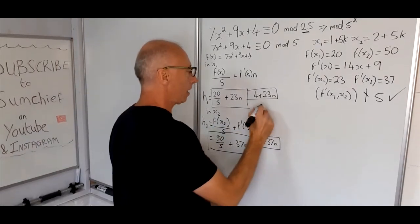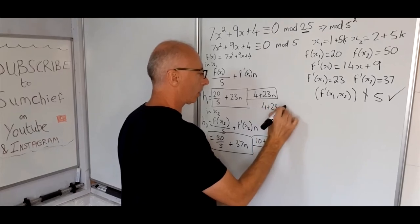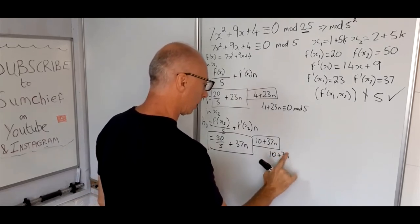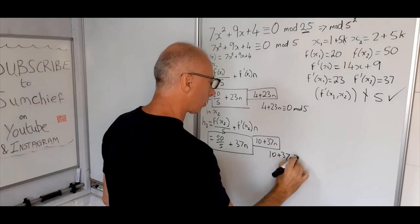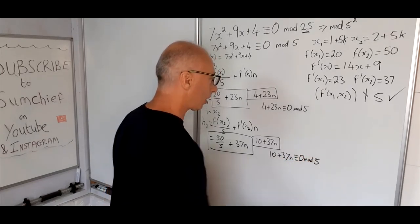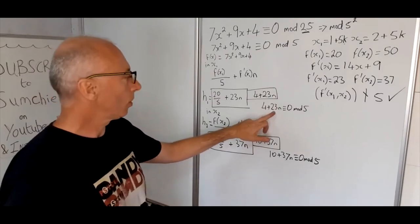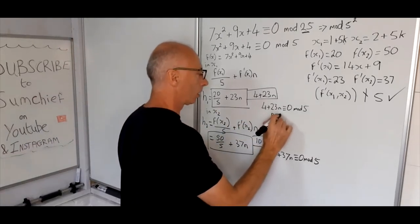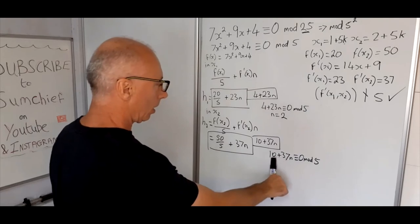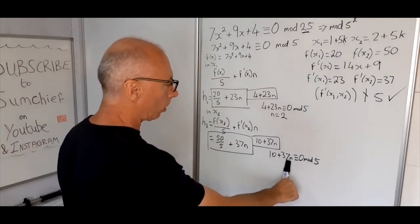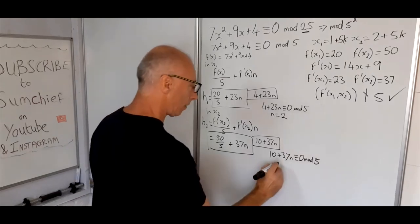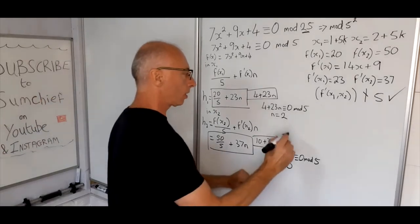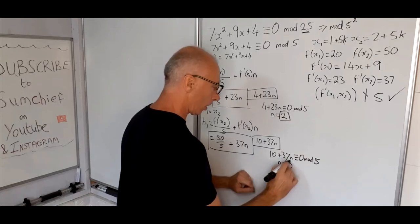So we've got -4 plus 23n is congruent with 0 mod 5. And here we will have -10 plus 37n is congruent with 0 mod 5. So -4 plus 23n to get something congruent with 0 mod 5. Well 2 times 23 is 46 so -4 plus 46 is 50 so n is 2. And here -10 is congruent with 0 mod 5 anyway so n can equal 0. That's the easiest solution for this one. So now we've got these values here. We've got our 2 and we've got our 0.